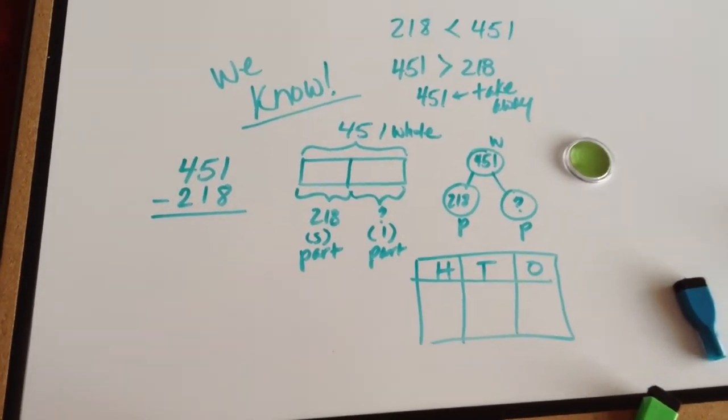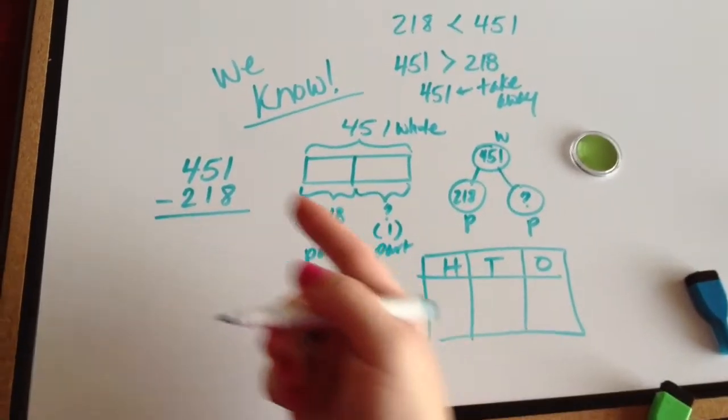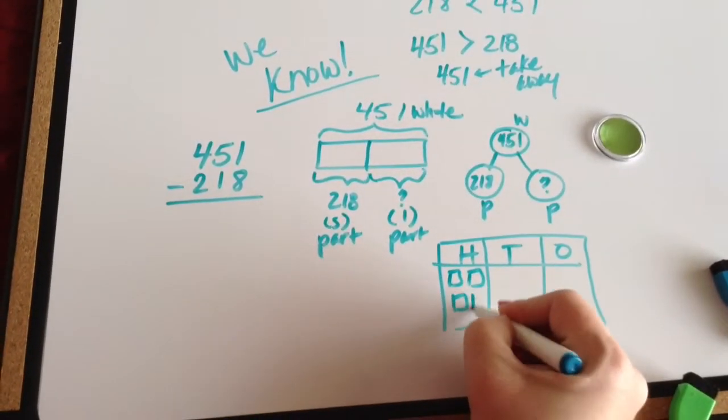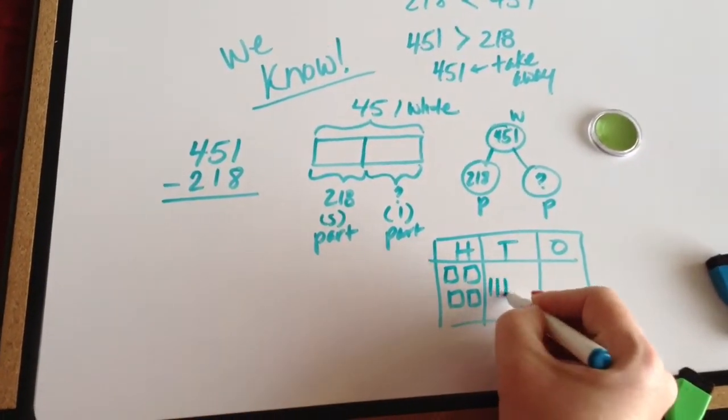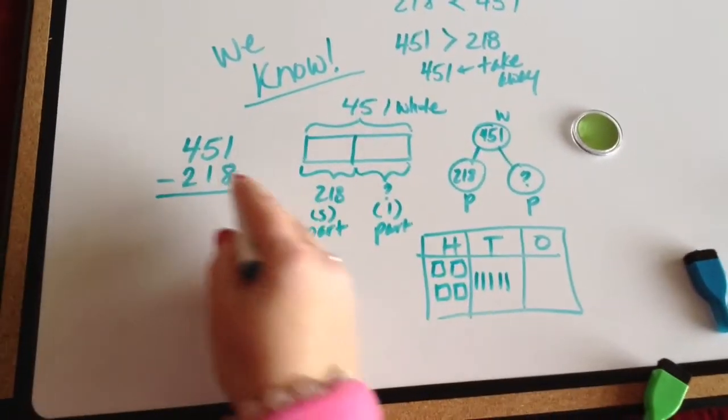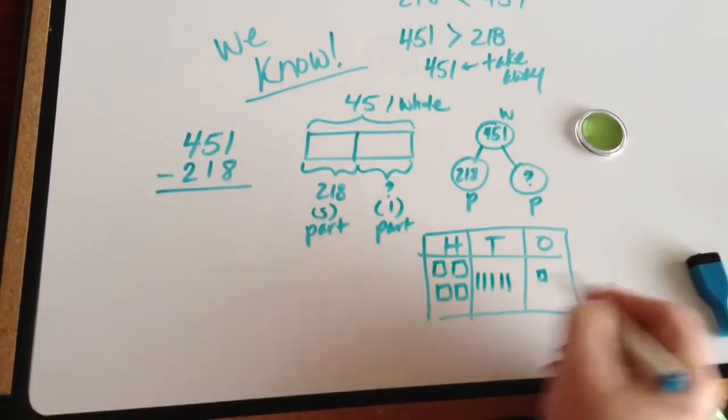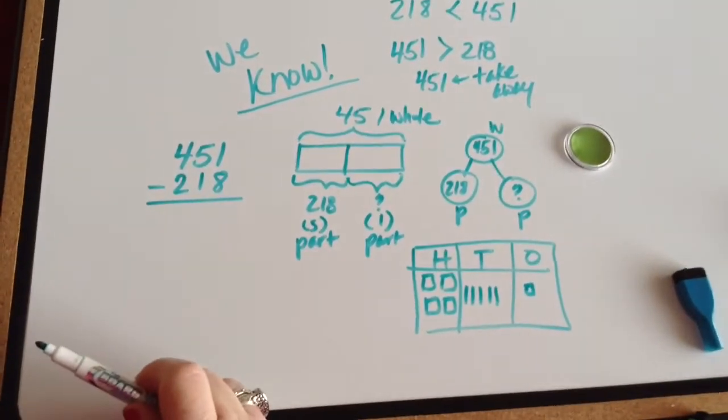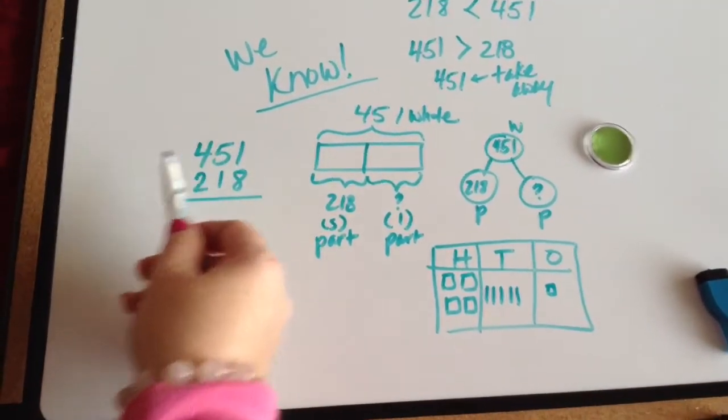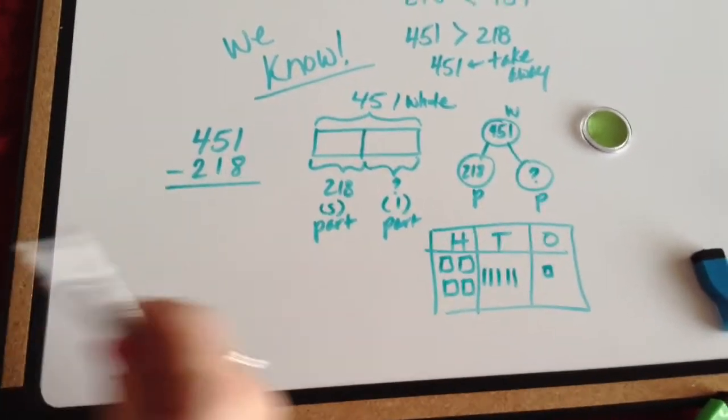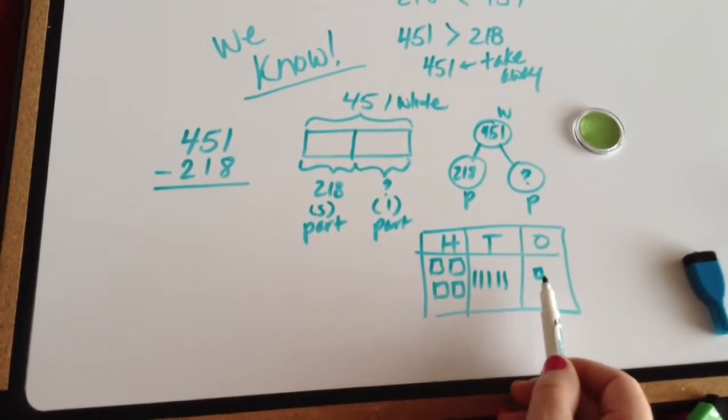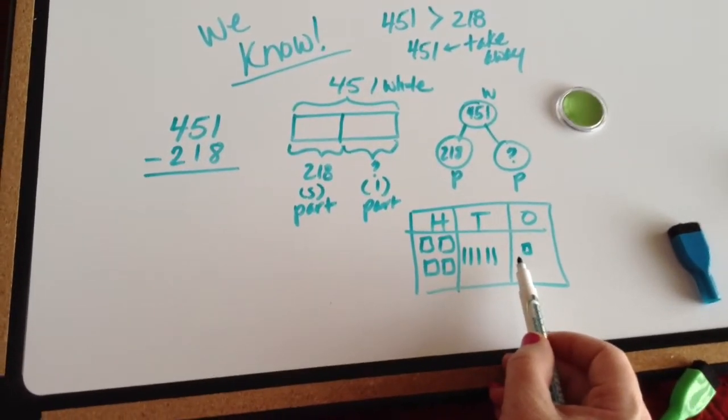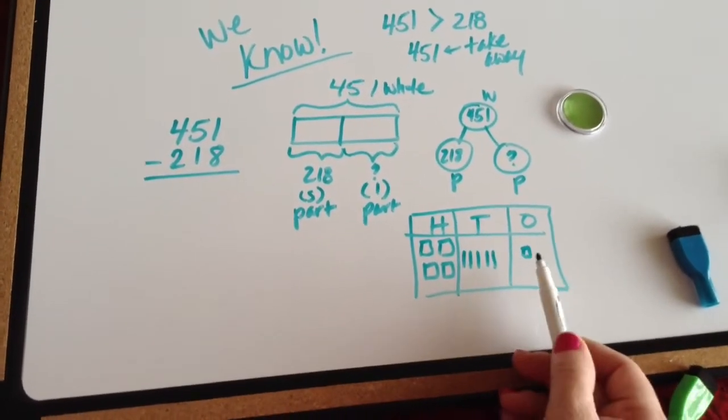Now you might know some other things. Go ahead and write it down. But now we can get started. 451, so 4 hundreds, 5 tens, 1 one. So we'll start in the ones place: 1 one take away 8 ones. Can we do that?